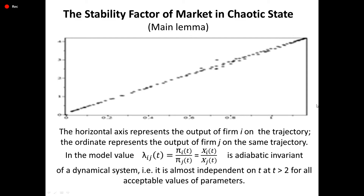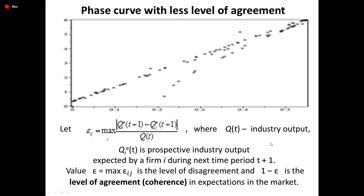The stability factor of market in chaotic state: the horizontal axis represents the output of firm i on the trajectory, and the ordinate represents the output of firm j on the same trajectory. In the model, value lambda is defined as an adiabatic invariant of the dynamical system — it is almost independent of t for all acceptable values of parameters. Let epsilon_ij be defined by the formula, where Q(t) is industry output and Q_i^e(t) is prospective industry output expected by firm i during next time period t+1. The value epsilon = max(epsilon_ij) is the level of disagreement, and (1 - epsilon) is the level of agreement, or coherence in expectations in the market.